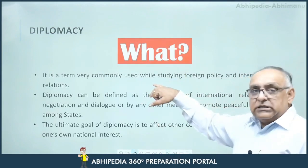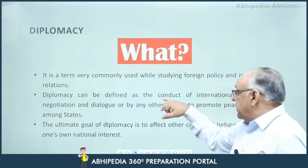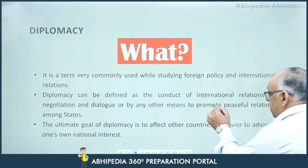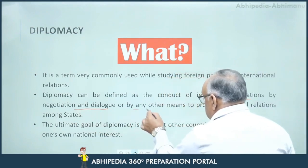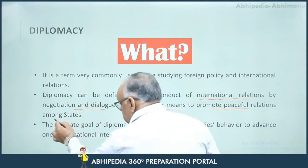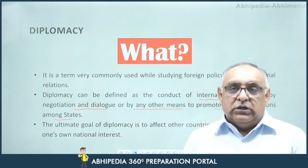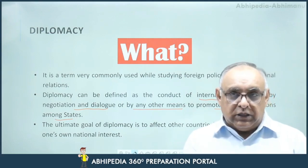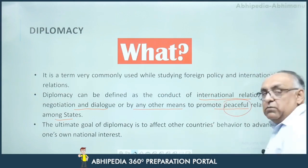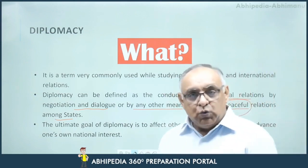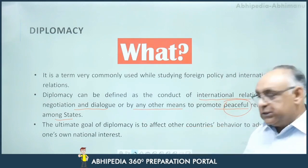So what is diplomacy? It is a term very commonly used while studying foreign policy and international relations. Diplomacy can be defined as the conduct of international relations by negotiation and dialogue, or by any other means, to promote peaceful relations among states. Our primary concern in diplomacy is to promote peaceful relations, to influence the behavior of other countries, and to serve our national interests — but this must be done by peaceful means only. Violence, war, and weapons are not used. The ultimate goal of diplomacy is to affect another country's behavior to advance one's own national interest.